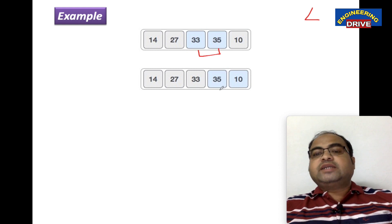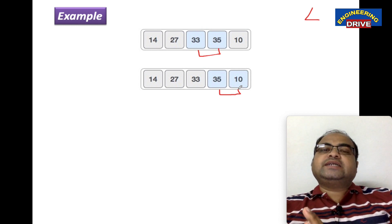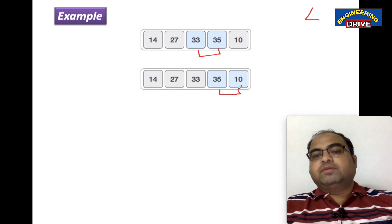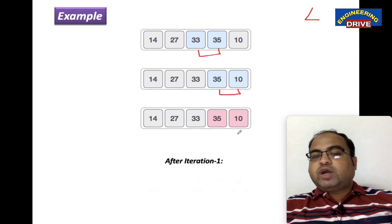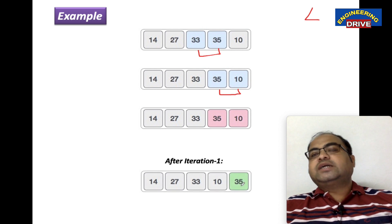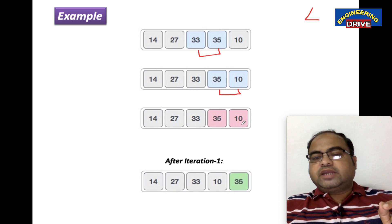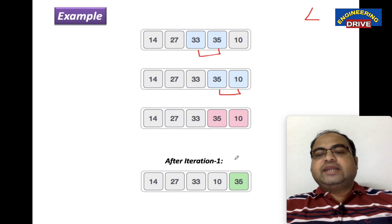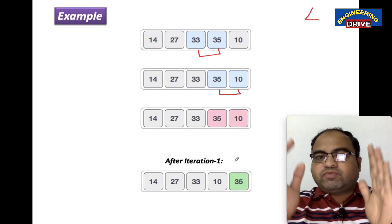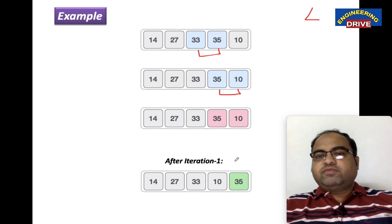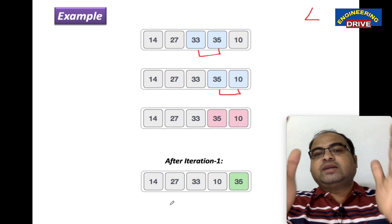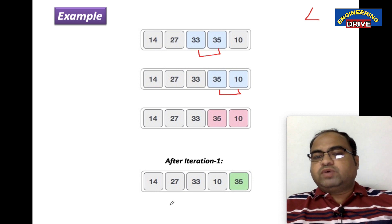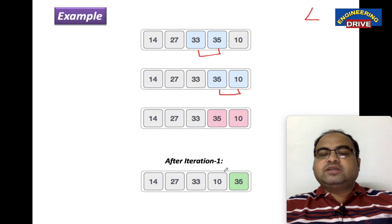Now comparing 35 and 10: 35 is less than 10 — condition false, so we swap those numbers. We get 10 and 35 in swapped positions. This is after iteration one — after one entire round of steps. One iteration or one circular repetition has been completed.